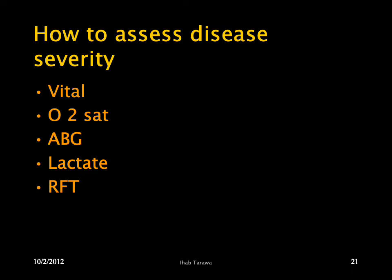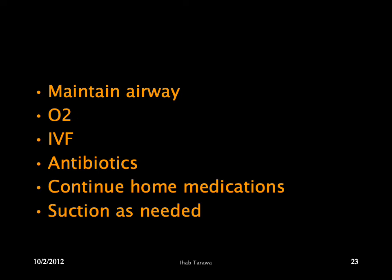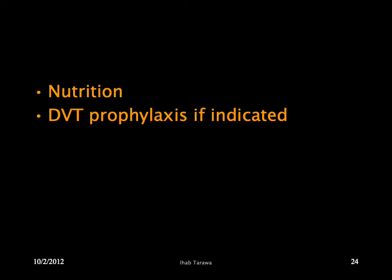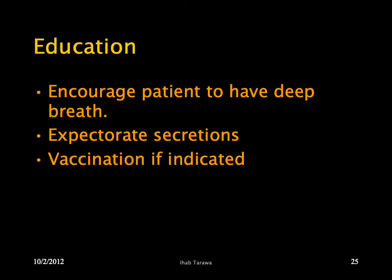Ensure oxygenation is adequate using different methods. With pneumonia, hypotension, and tachycardia indicating sepsis, give fluid resuscitation and antibiotics. For patients with chronic illness, continue home medications. Perform suction as needed and provide nutritional support. If the patient is bed-bound, assess DVT risk and bleeding risk, then decide on appropriate DVT prophylaxis. Encourage deep breaths. Vaccinate for influenza, pneumococcus, and now COVID-19 as well.